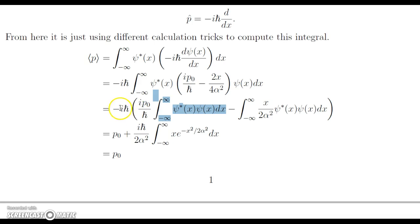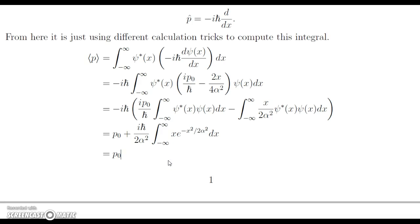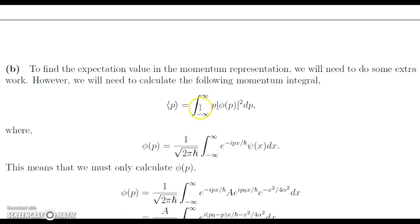So we have p₀ plus the second integral, which involves x over 2 alpha squared times the modulus squared of the wave function. This integral can be done by u-substitution, and it turns out it is symmetric, so the integration gives zero. We're left with the expectation value equal to p₀ — exactly what we expected. To verify this further, let's go over to the momentum representation.